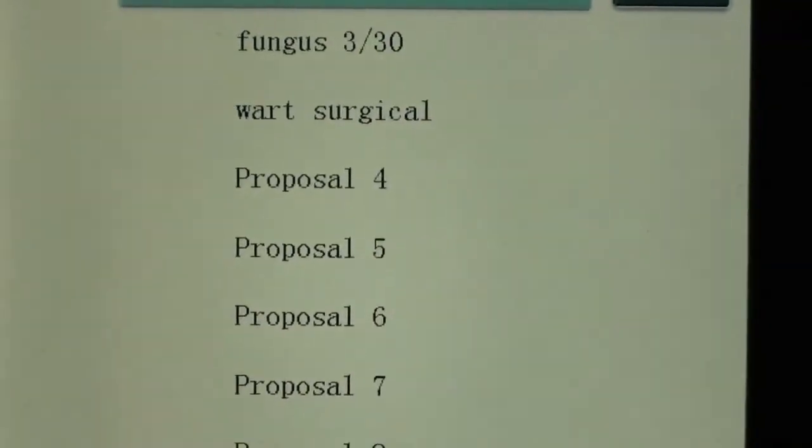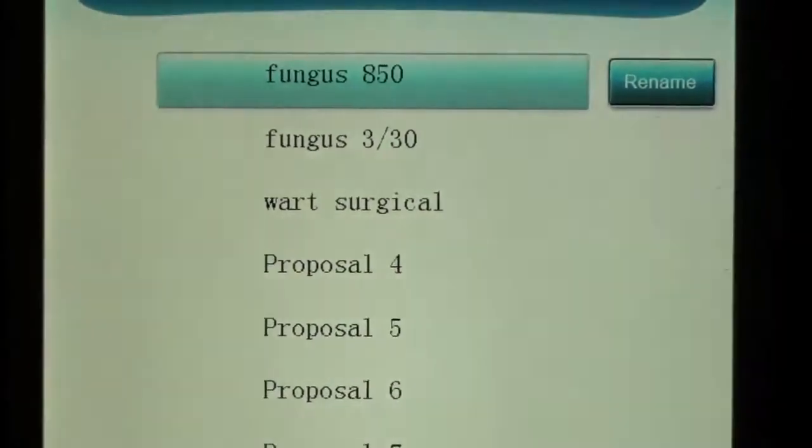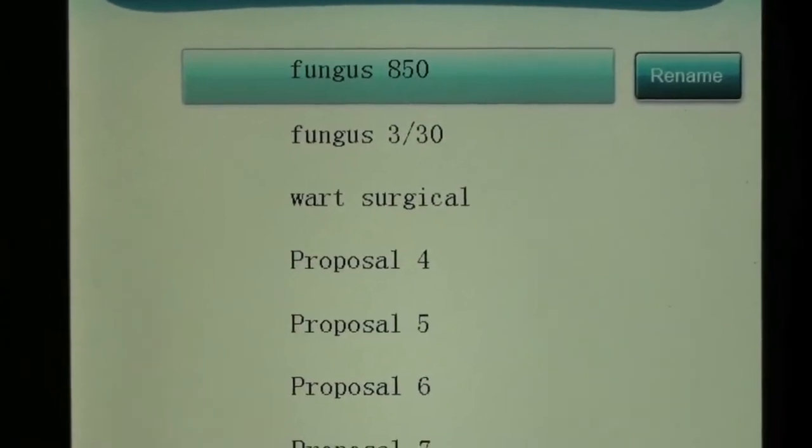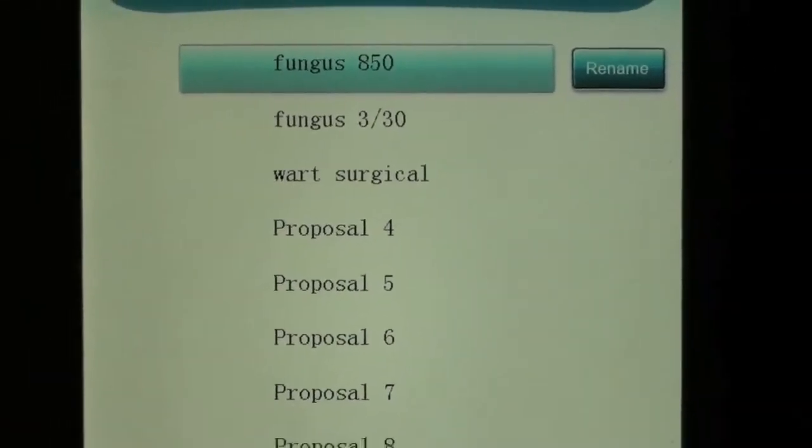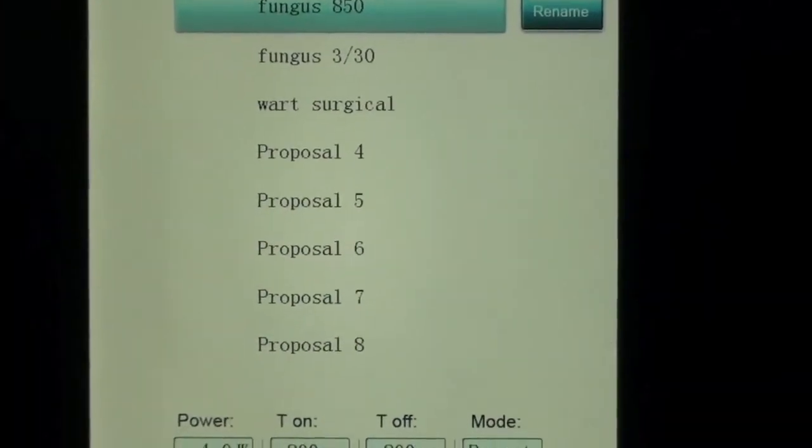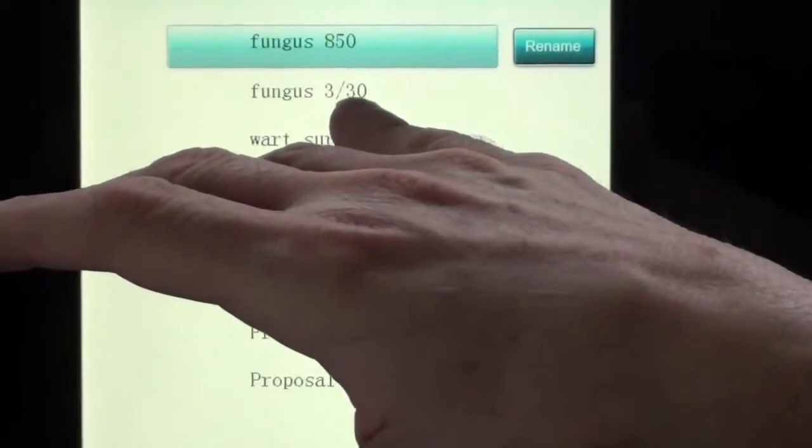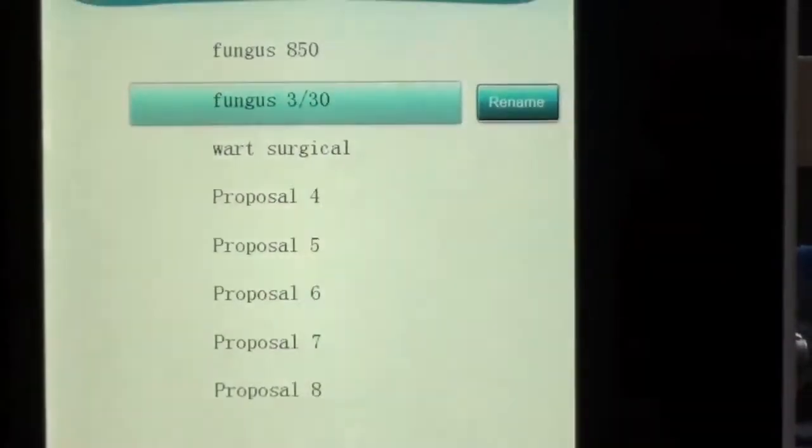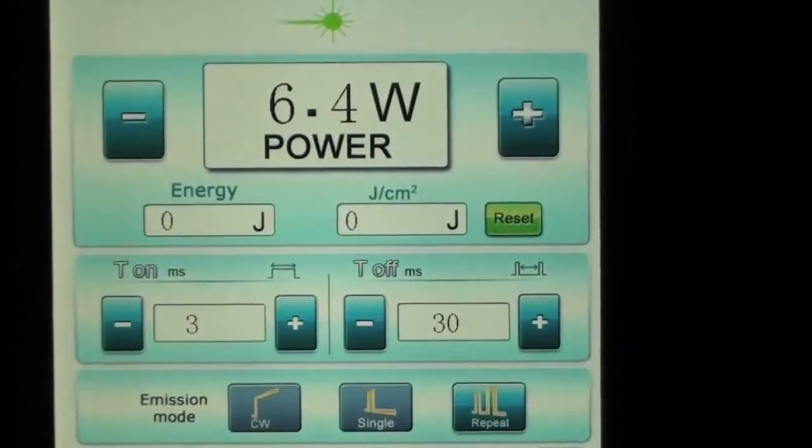We have a couple of proposals. We've got an 850. We've got a three and thirty, three millimeter. Excuse me, a three, it could be also a two millimeter or a 400 micron which is a two millimeter and a 600 micron which is a three millimeter. That's three, three milliseconds on and 30 milliseconds off.